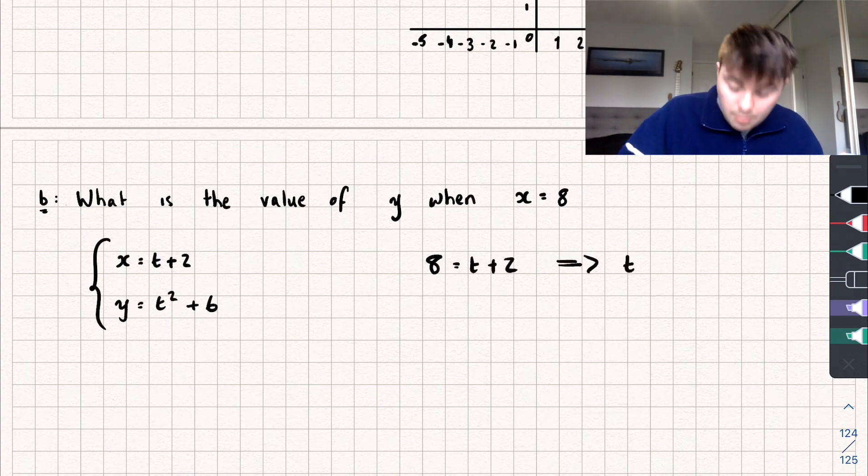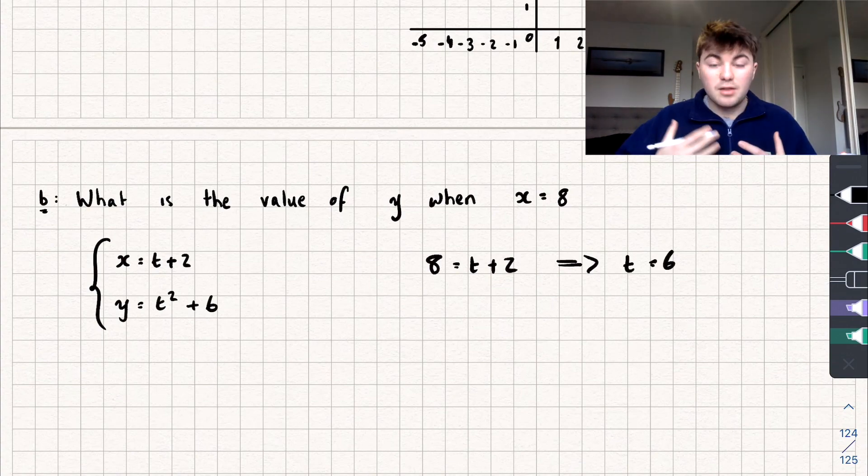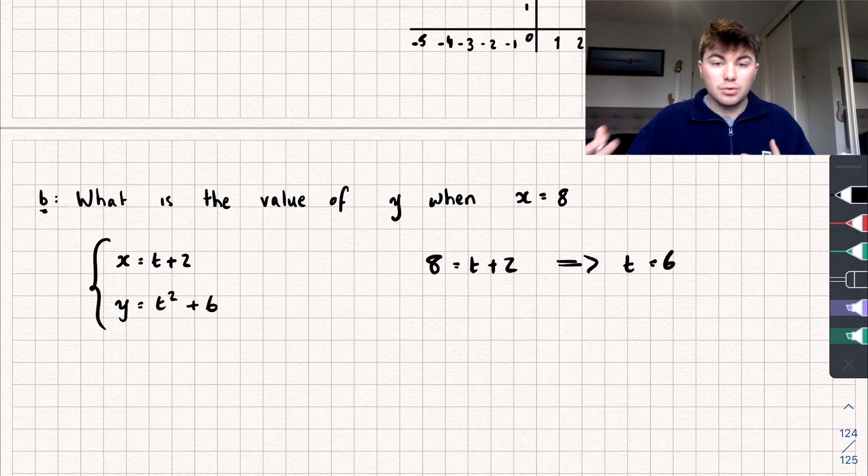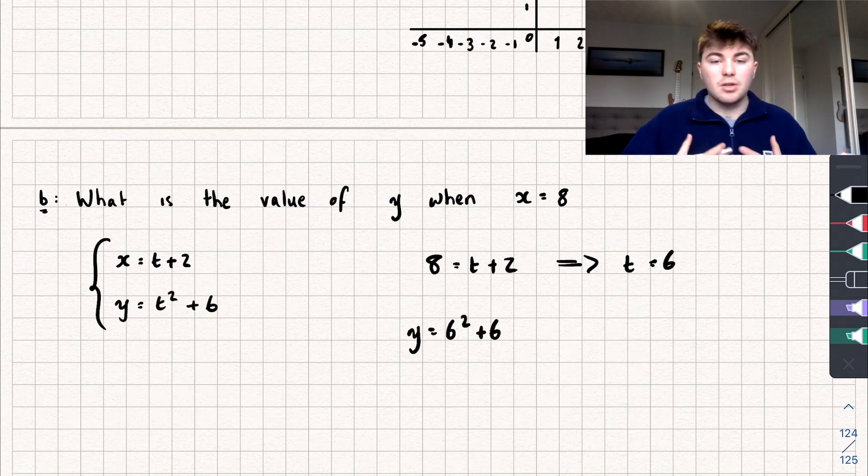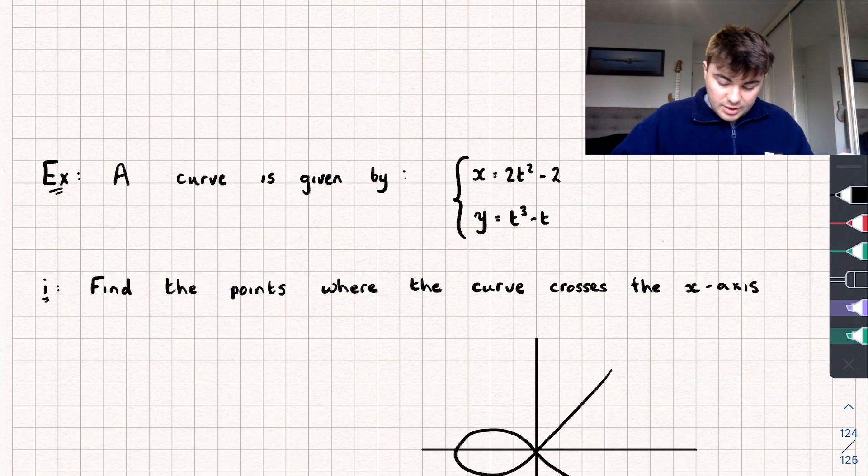And so to find the corresponding value of y, I'm just going to substitute t equals 6 into my equation for y. We get that y equals 6 squared plus 6, so we've got 36 plus 6, and we get that y is equal to 42. And that would be the answer to that question.